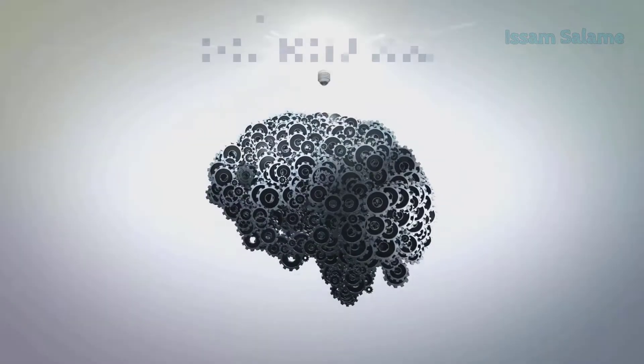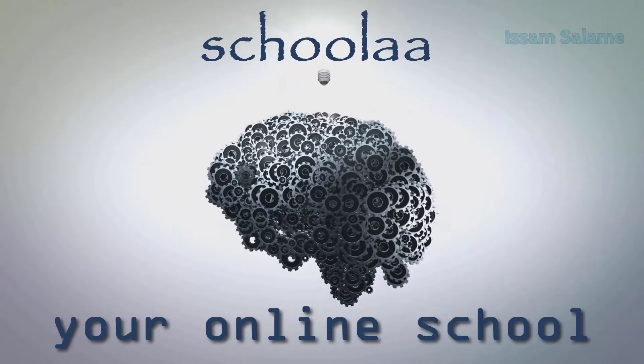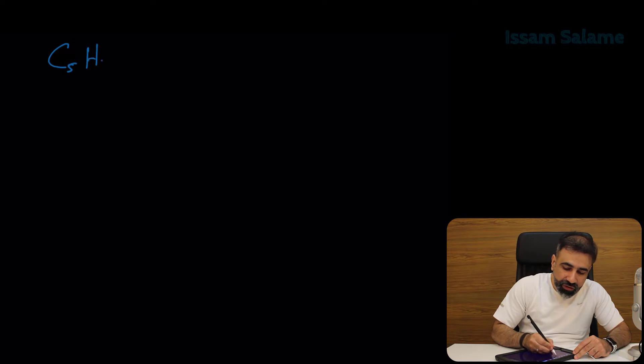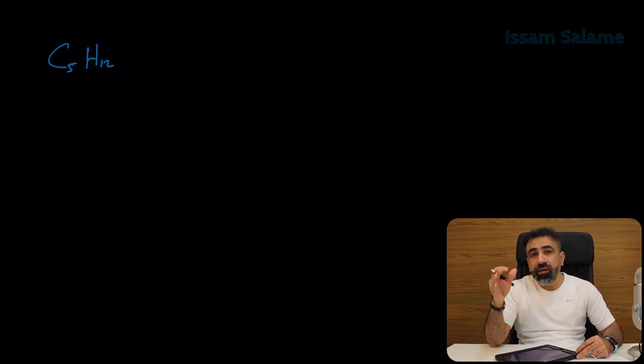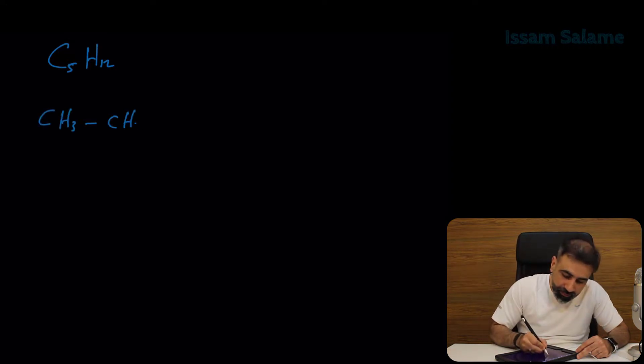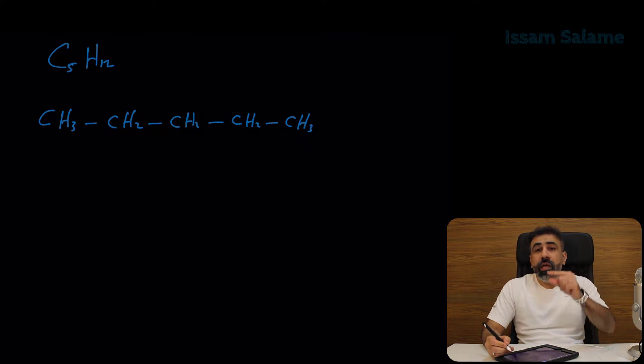Someone asked about the isomers of pentane. The general formula for pentane is C5H12. To draw all the possible isomers, we start with the easiest: five carbon atoms connected in a chain. The name of this structure is pentane.